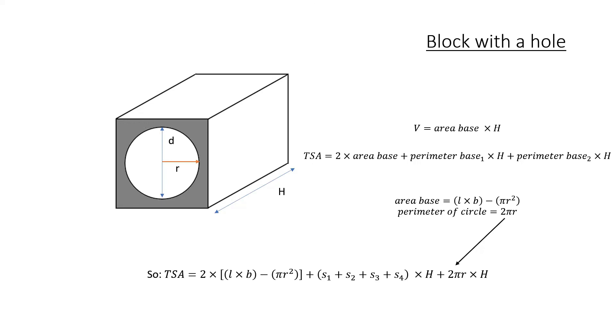or just 4 times the length of the side, if it's a square, times height, which will give me the perimeter of my square block, and then I need to add the perimeter of my circle times height, so 2 pi r times h.